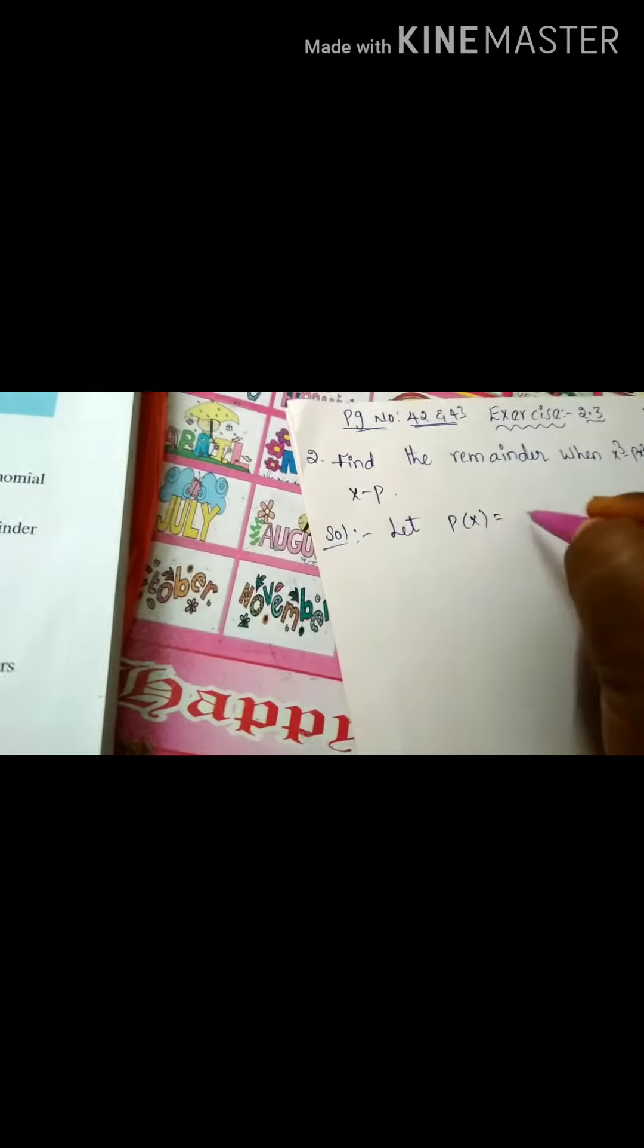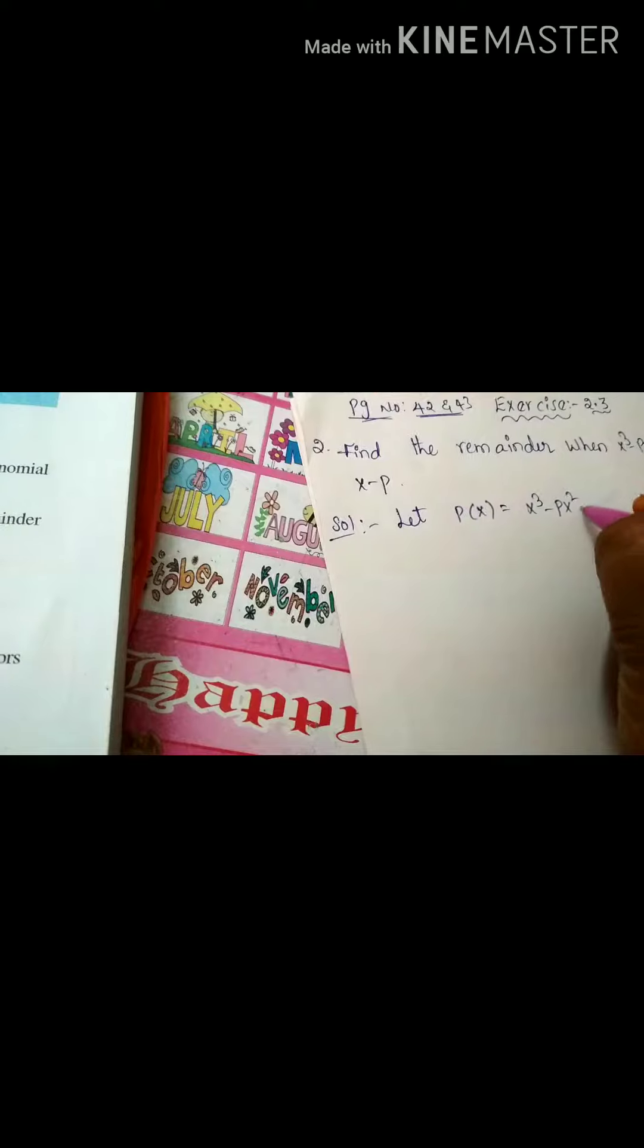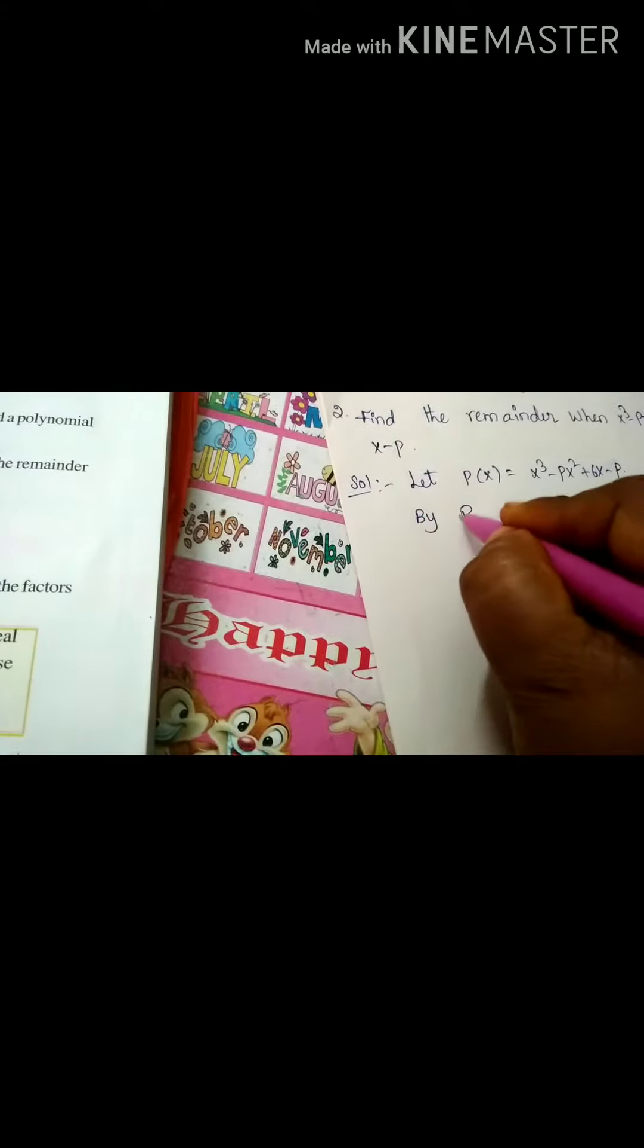Find the remainder when x cube minus p x square plus 6x minus p is divided by x minus p. Let p of x is equal to x cube minus p x square plus 6x minus p.